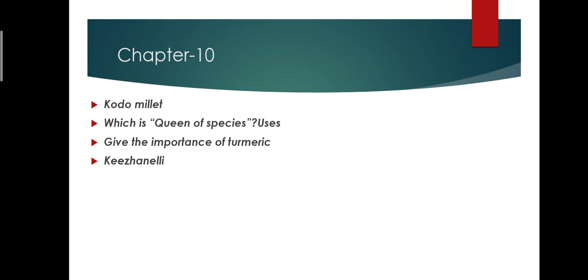Next, chapter 10, that is economically useful plants. First question: Kodo millet, that is botanical name, origin, and uses. Botanical name and uses are very important. Next, which is called queen of species? You have to know the botanical name and uses. Next, give the importance of turmeric. Next, Keezhanelli, that is medicinal importance.